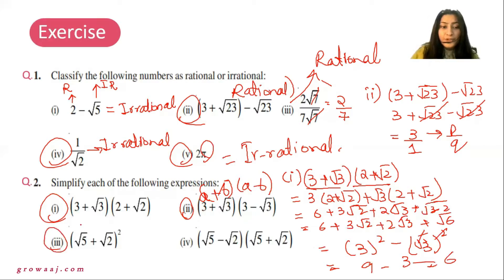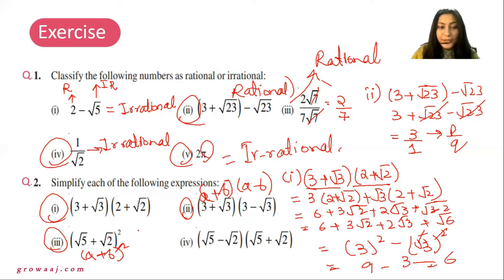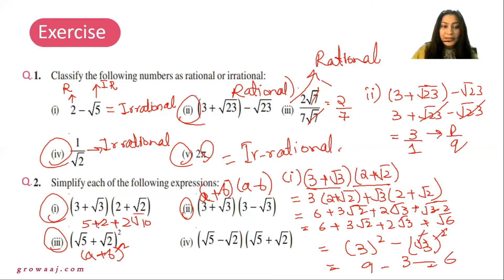Question number 3 is in the form A plus B whole square, which expands to A squared plus B squared plus 2AB. So it will be 5 plus 2 plus 2 into 2 square root of 10. This is the simplification.